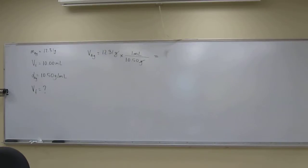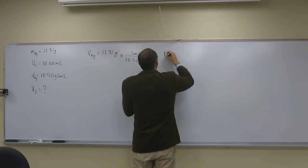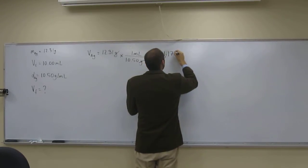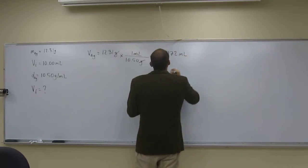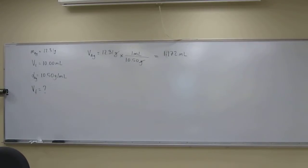So 12.31 divided by 10.50. So this volume is 1.172 mils. So that's how much volume is in the silver.